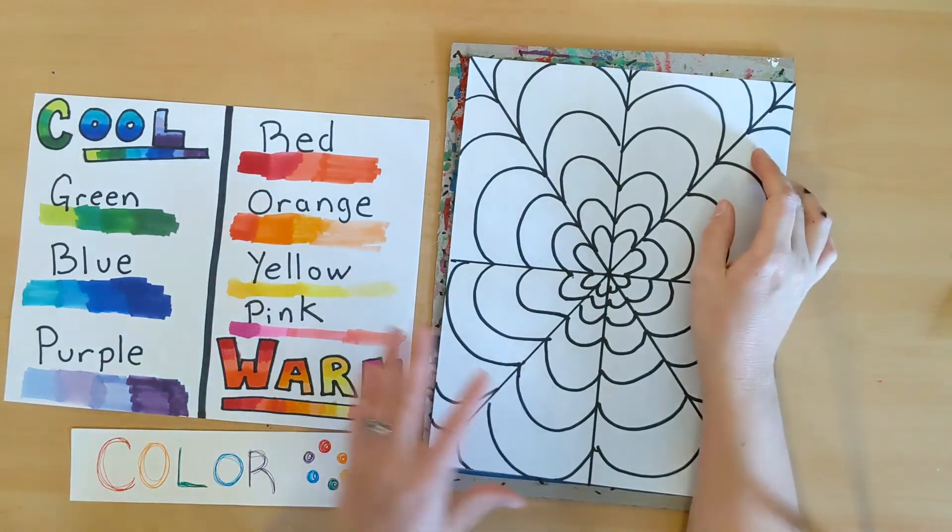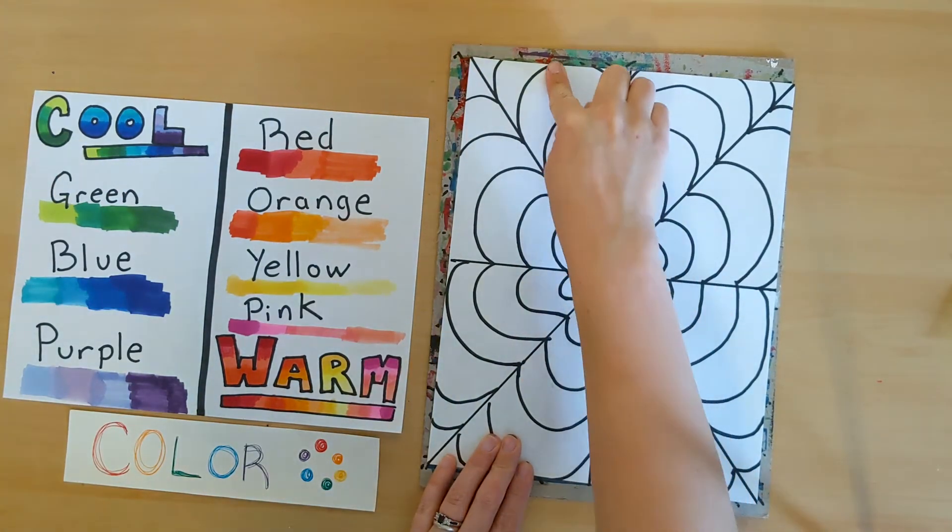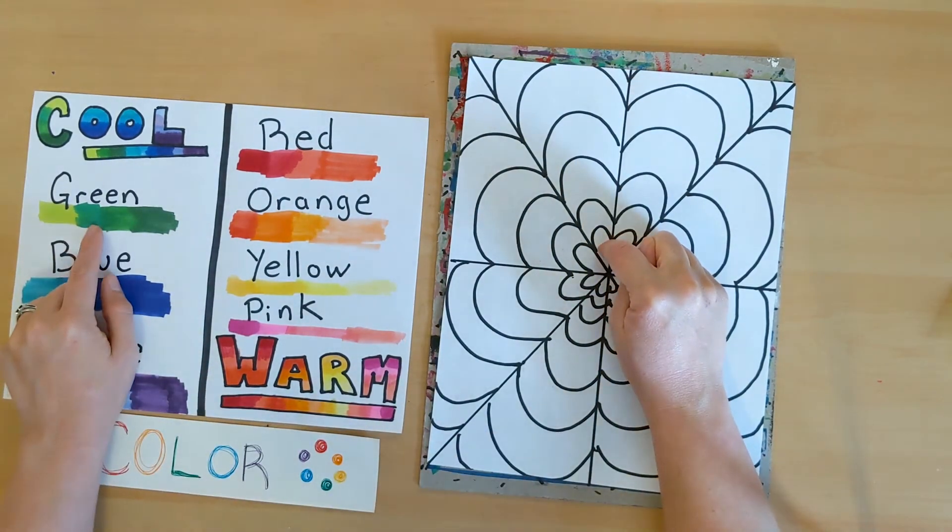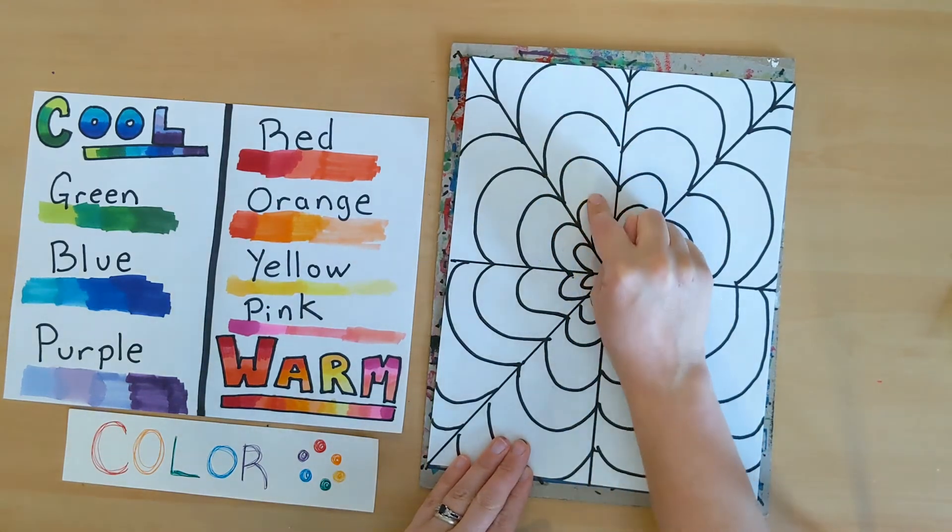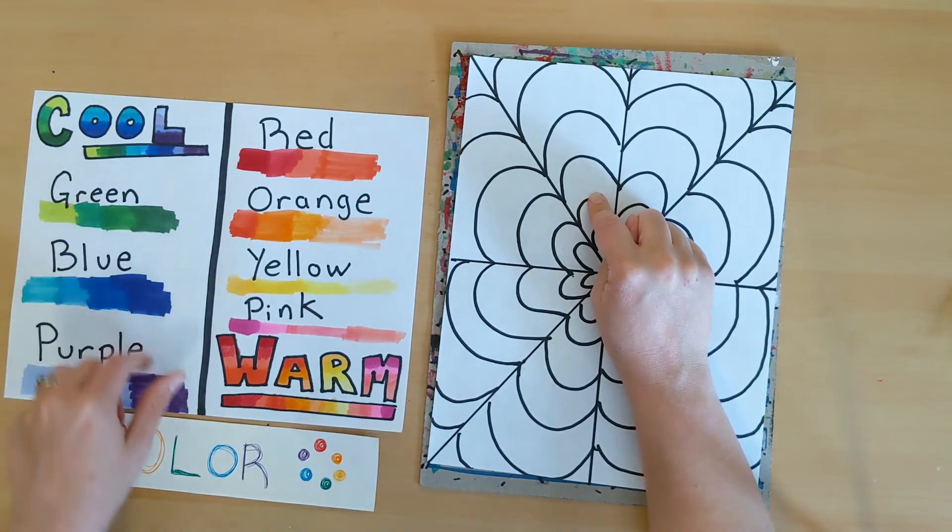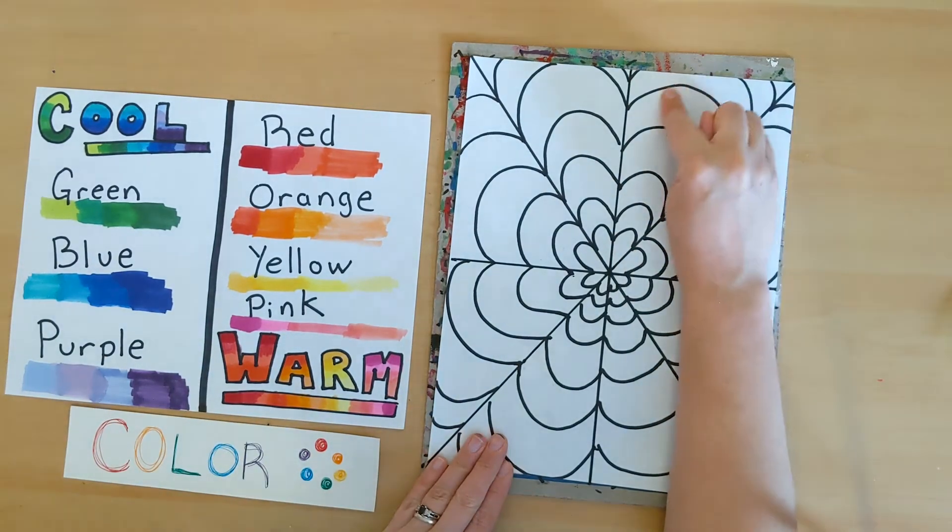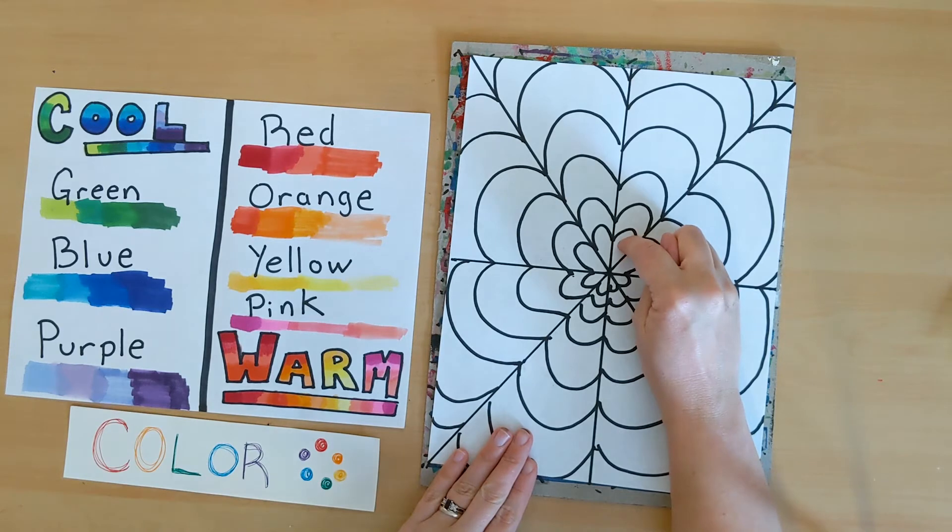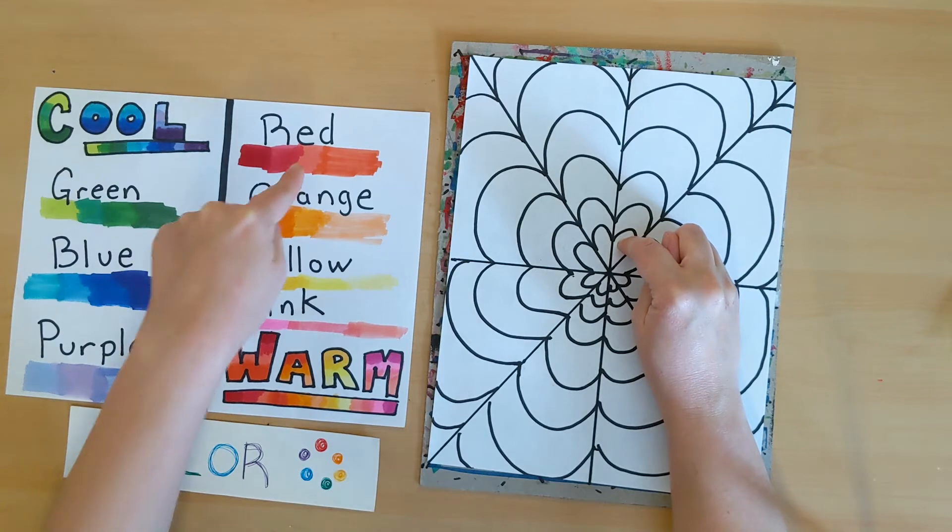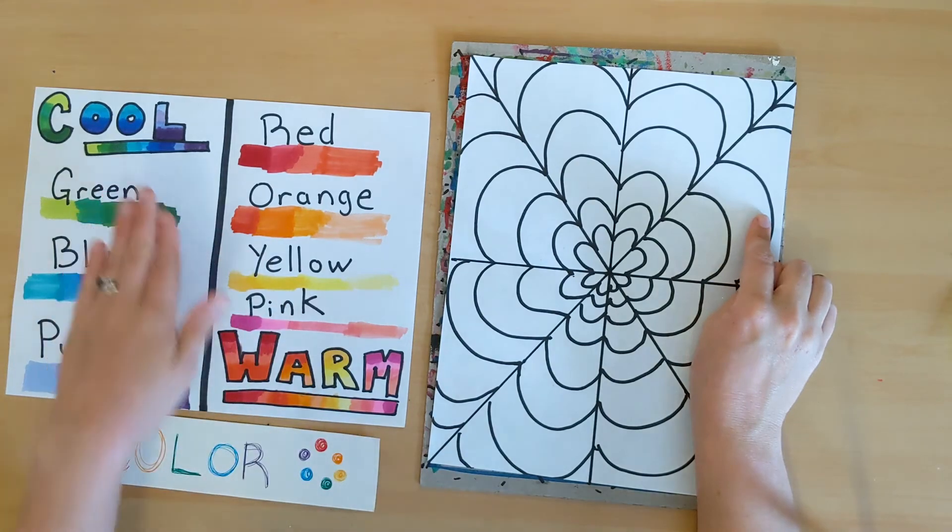Just like last week, we want to keep cool together and we want to keep warm together. So each of these, pick if you want it to be cool or warm. If I start with green, this entire section here has to be cool. If I start here with pink, this entire section has to be warm. Whatever color you start with, the entire section has to stay cool or warm.